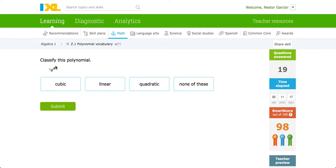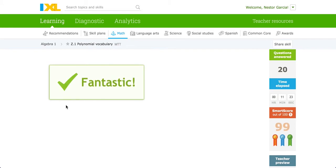Classify this polynomial. It's an exponent of four. That means it's a fourth degree polynomial this time. So none of these because that option is not given to us.